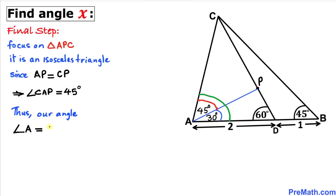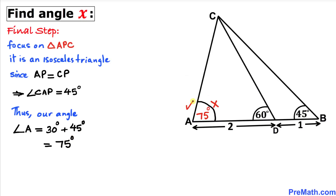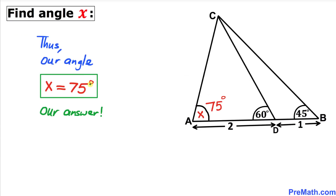Therefore angle A equals 30 degrees plus 45 degrees which is equal to 75 degrees. Since angle A equals X, we conclude that angle X turns out to be 75 degrees. That's our final answer.